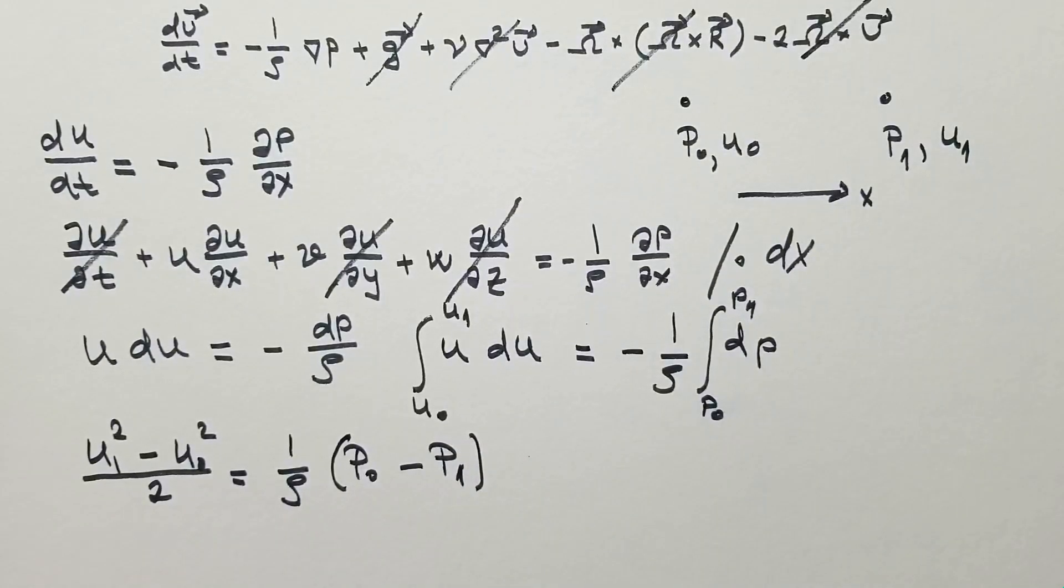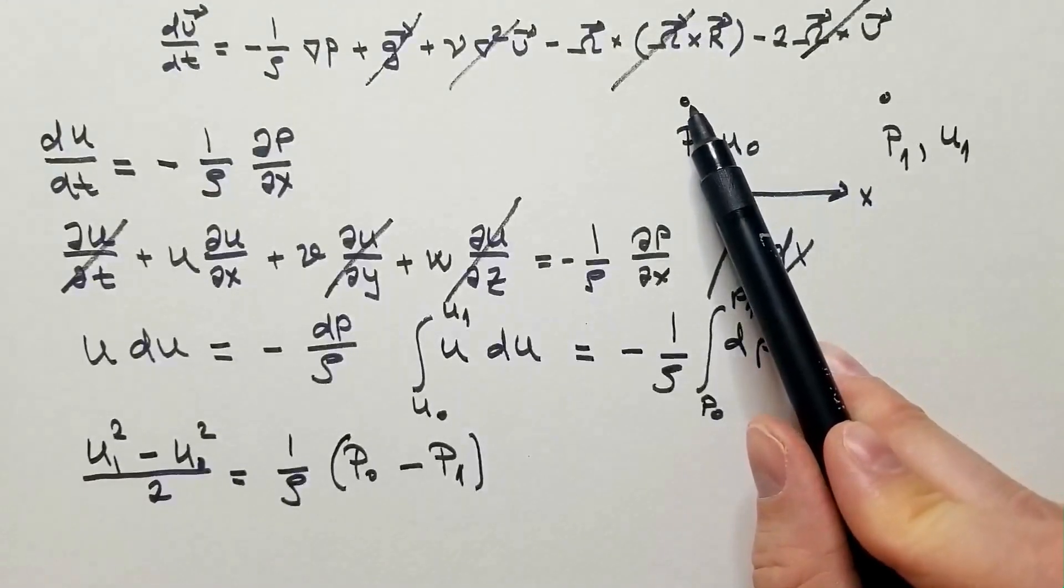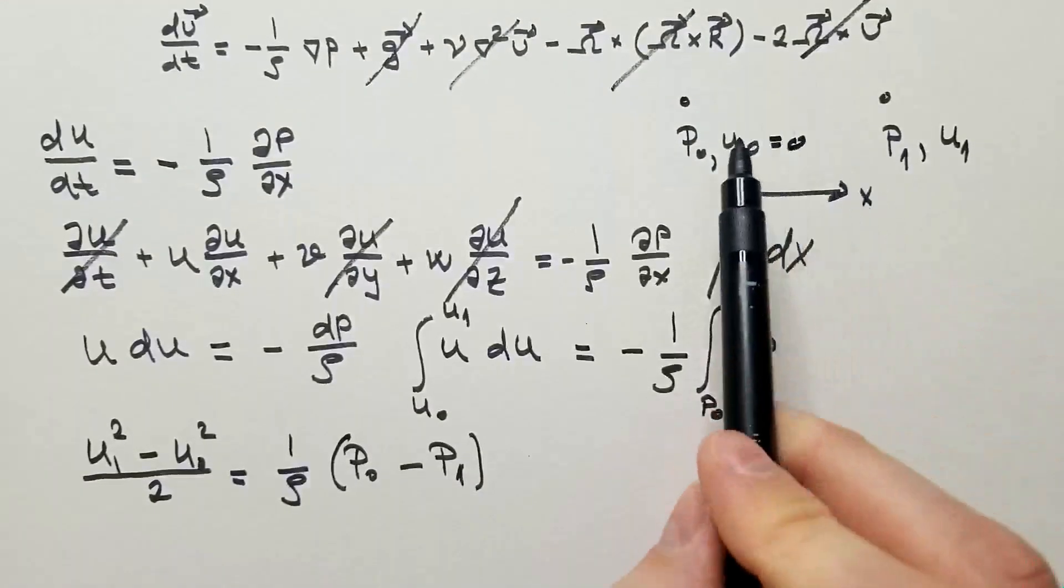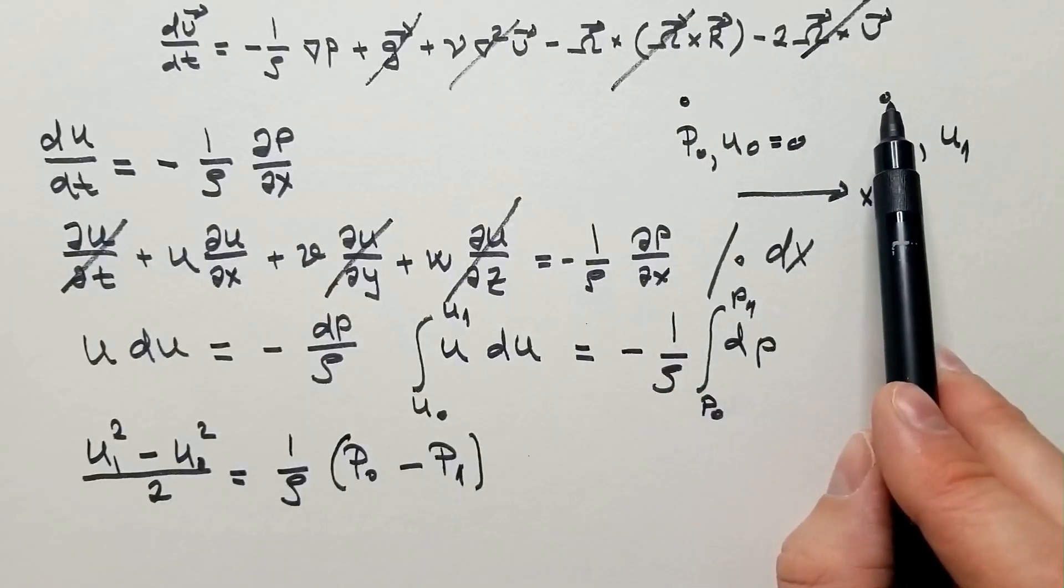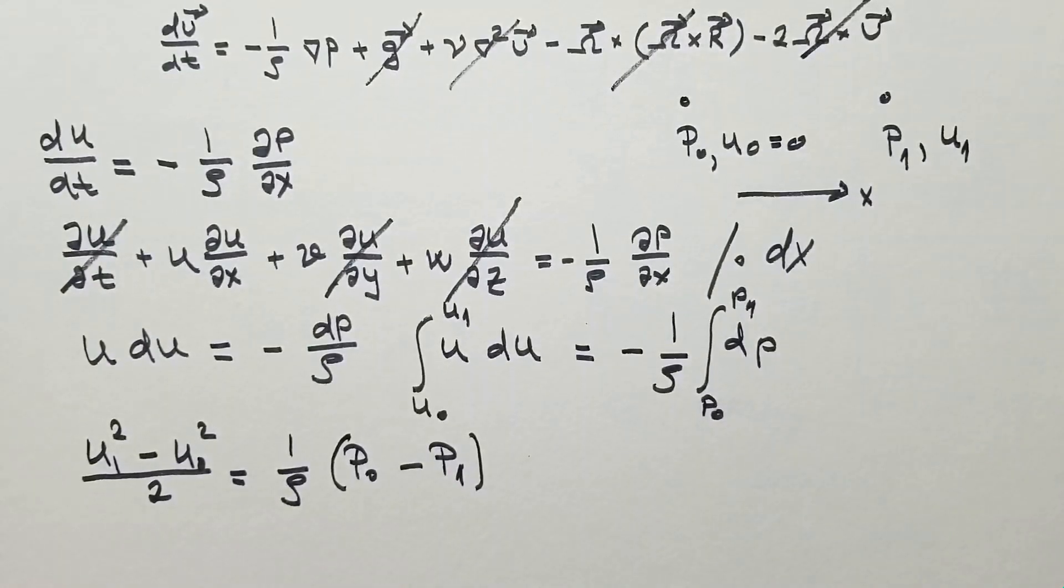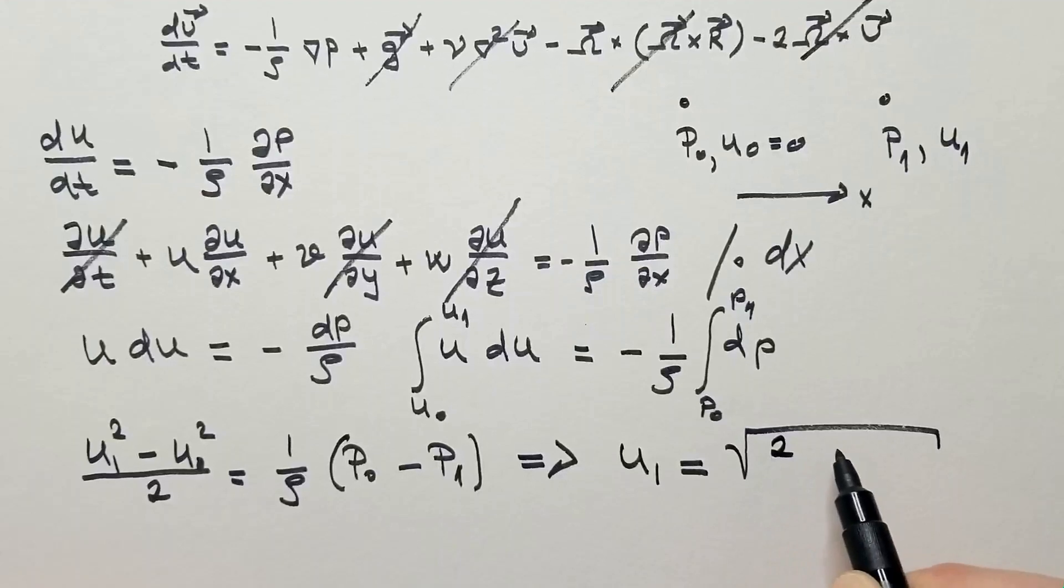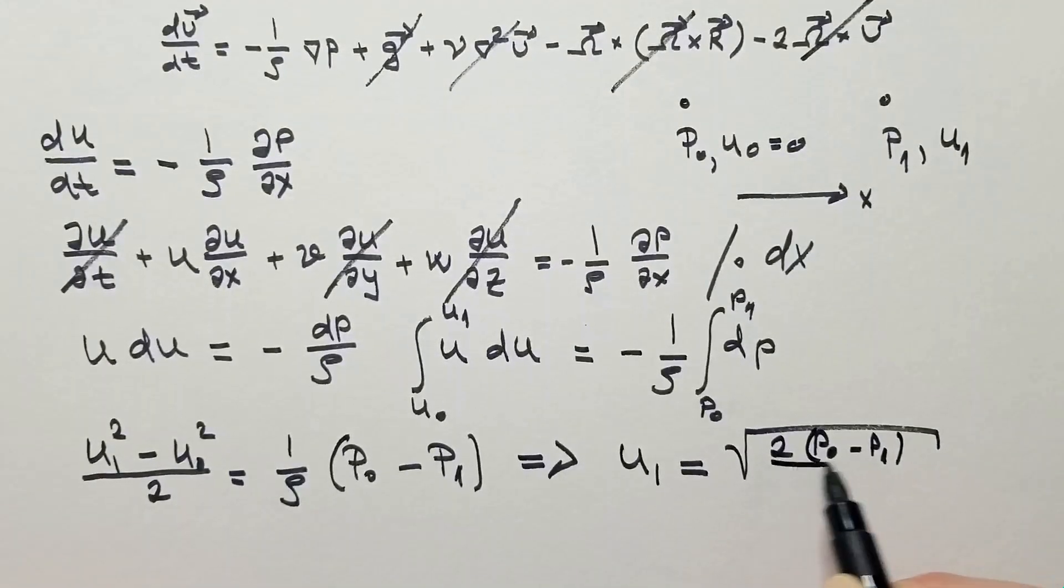Let's say we are interested, what is the velocity, u1, if the original velocity in p at the zero position is zero. So, the air parcel that starts from here has no initial velocity. What will be velocity when it reaches this point where the pressure is p1? In that case, this equation becomes u1 is equal square root 2 p0 minus p1 divided by rho.